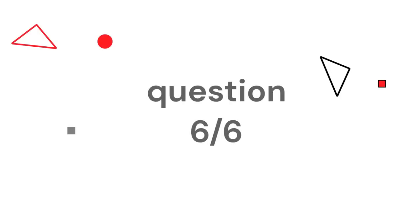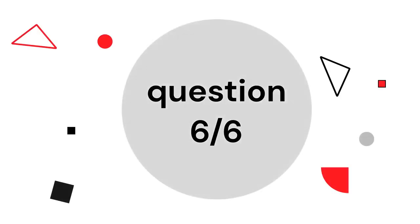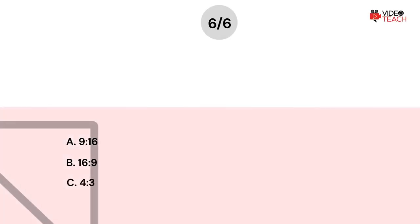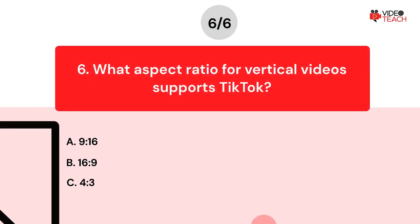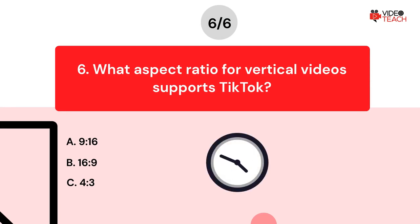Question number six. What aspect ratio for vertical videos does TikTok support? Option A, 9 to 16. Option B, 16 to 9. Option C, 4 to 3. Now you have about 15 seconds to think about your answer.